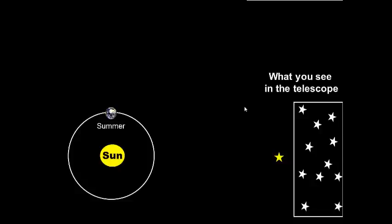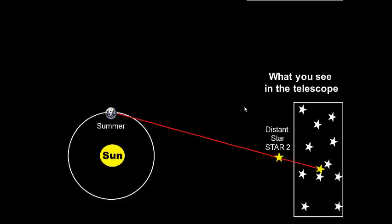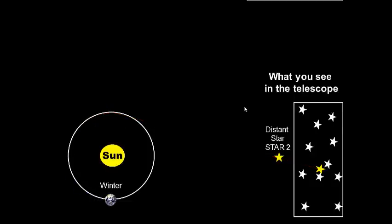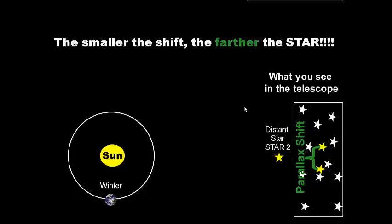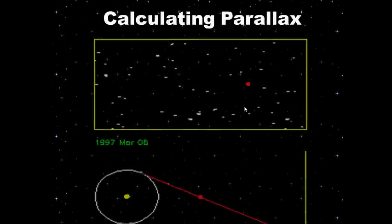Now let's look at a far away star. We look at it in the night sky, then six months later we look at it again — and it shifted less. It didn't move as much; it has a shorter parallax shift, so it is a farther star. That's how we determine the distance to stars: by measuring their parallax shift and how much that shift is.